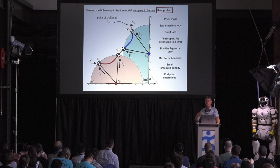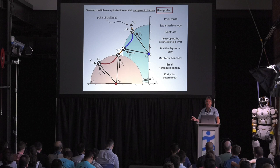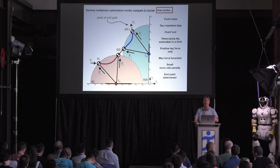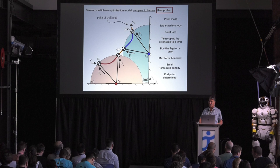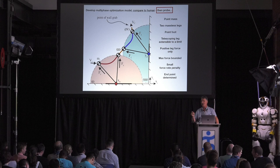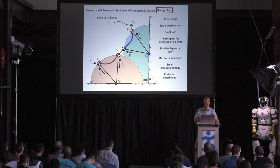Two massless legs, a point foot so there is no ankle, a telescoping leg that's extensible to a limit that we think is comparable to the human leg, so it doesn't have a flexing knee. In all other regards, it's identical to the human knee. Now that's supposed to be a joke because this is nothing like the human leg. But positive leg forces, max forces bounded. In this case, we just took the maximum empirical ground reaction force that we measured. Small penalty for force rate, so it just doesn't default to impulsive activity.